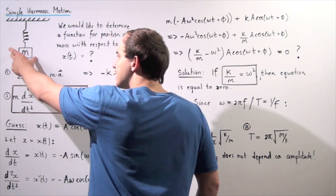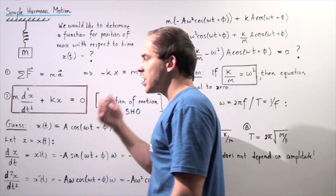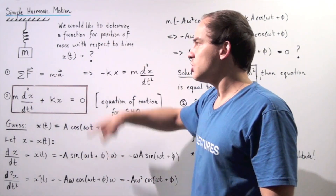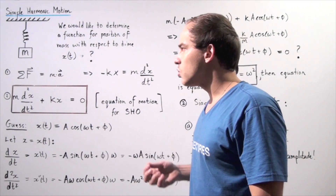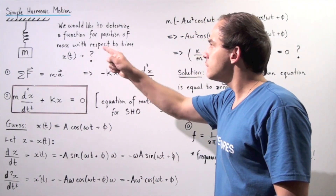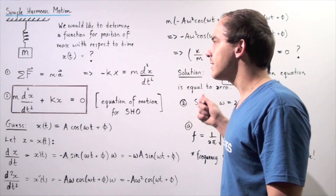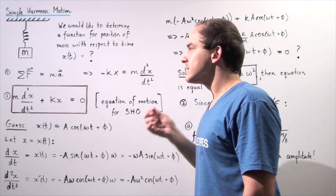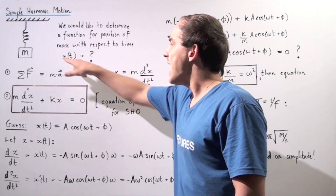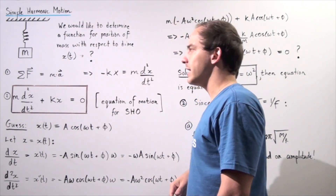Let's suppose we take the mass, bring it down, and let go — but right before we let go, we start a stopwatch. We let go, press the stopwatch, and the object continues oscillating back and forth. At some time t, we check that stopwatch. We want to determine a function for the position of the mass as it oscillates with respect to time — an equation where plugging in a time value gives the exact position of the object.